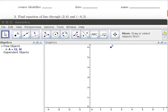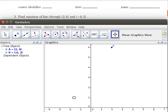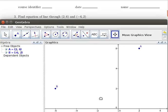Here I've used GeoGebra to plot the point 2, 6. I asked GeoGebra to plot the point minus 6, 2, but I'm going to need to slide that over a little bit so we can see it. So there's our two points.